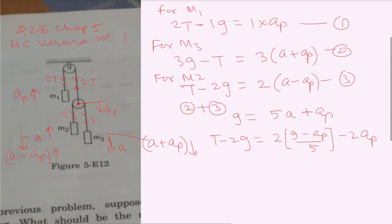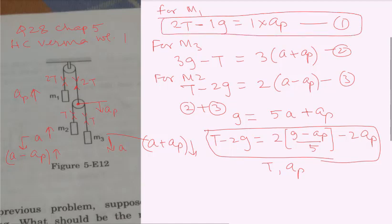Now if you solve it, this equation is now in t and ap, and I have equation 1 also in t and ap. If you solve these two then you can get the value of ap which is the acceleration of m1.